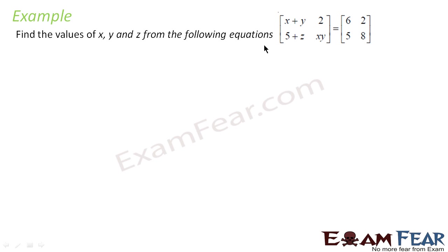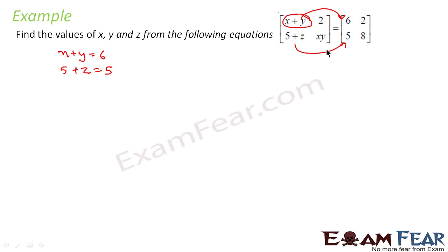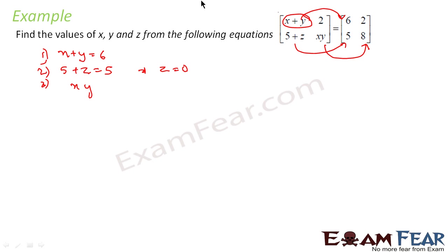Let's take one more example. We have to find the value of x, y, and z given that these two matrices are equal. Since the matrices are equal, corresponding elements are equal, so: x + y = 6 (first equation), 5 + z = 5 (second equation), and x·y = 8 (third equation).